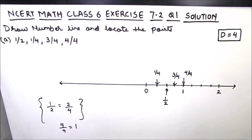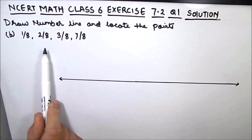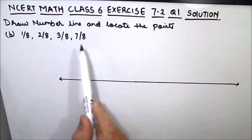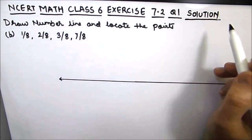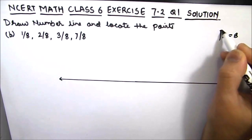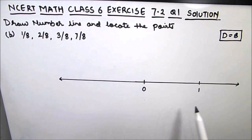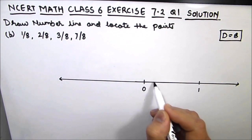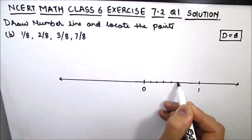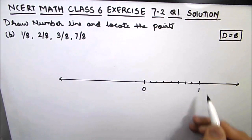Let's move on to Part B. The fractions are 1/8, 2/8, 3/8, and 7/8. Here the denominator for all these fractions is 8. Since the denominator is 8, from 0 to 1 we have to make 8 subdivisions: 1, 2, 3, 4, 5, 6, 7, 8. These are our 8 divisions.